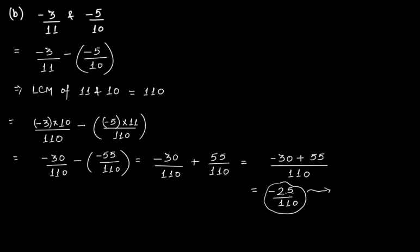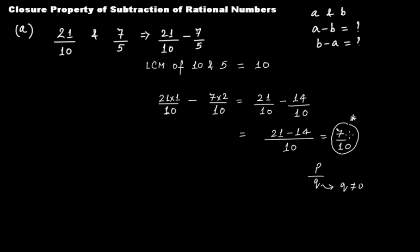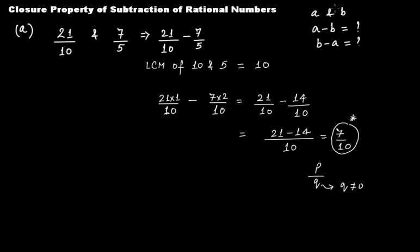But you notice again in this case the subtraction of two rational numbers is actually giving us a rational number. So from both these two examples we can clearly see that if we subtract two rational numbers with one another, then the result is actually a rational number. So we can say that if a and b are rational numbers and if we subtract these two rational numbers, then the difference will be a rational number. That is why yes, rational numbers are closed under subtraction.